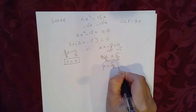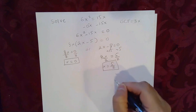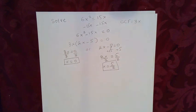So here we have two solutions, x equals 0 and x equal to 5 over 2.